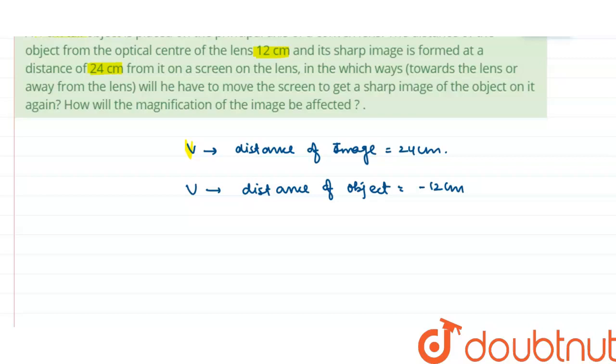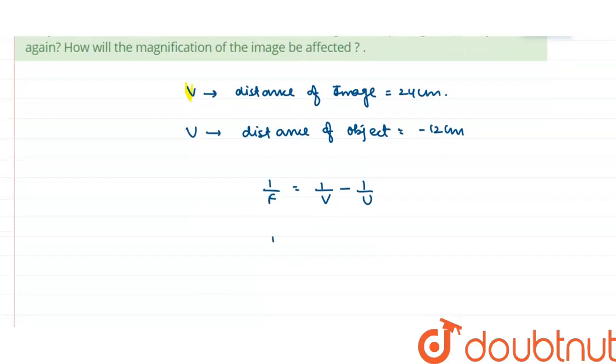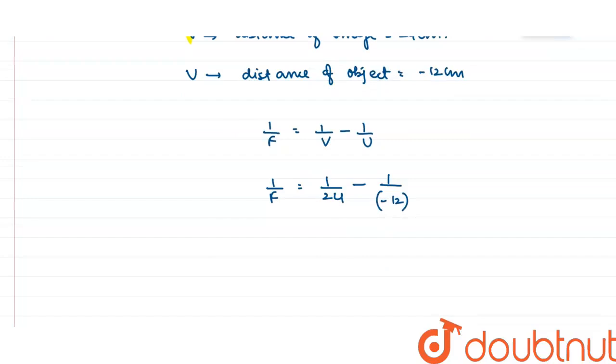Now I am going to use the lens formula. Lens formula is 1/F = 1/V - 1/U, where F is the focal length. Putting the values: 1/F = 1/24 - 1/(-12). Solving this, the value of 1/F comes out to be 1/8. That means focal length is 8 cm.